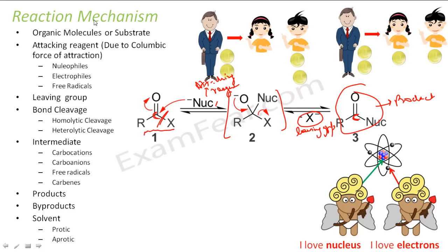So if you see here, a typical organic reaction has these many things: a substrate; a nucleophile or attacking reagent that attacks; a leaving group which leaves; a bond cleavage where the bond breaks and new bonds are formed; an intermediate that happens for a small fraction of time but plays a critical role in determining which product you'll get; a byproduct; and the whole thing happens in a solvent — protic or aprotic.